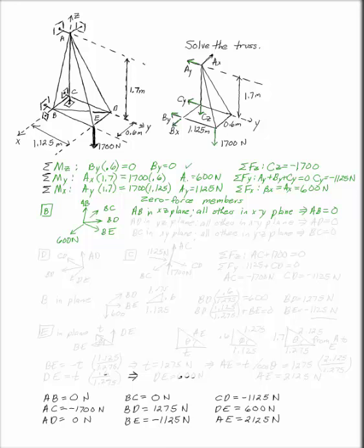Now look at another joint. Look at D. If I look at D, I will have BD, DE, and CD. Again, all of those are in the XY plane. AD is the only one that's not in the XY plane. So you can say AD is in the YZ plane, all others in the XY plane. That gives you AD equals zero.